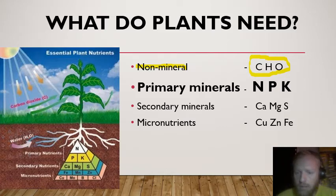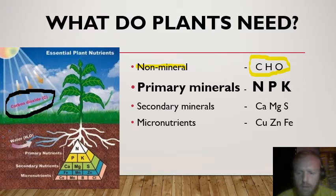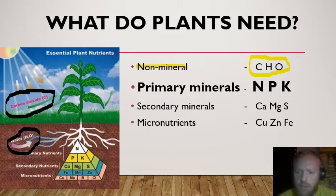Where does the plant get those three elements from? You can see there is an illustration of carbon dioxide being absorbed by the plant through its leaves, and also water being absorbed through its roots. That is where the plant gets C, H, and O from — because carbon dioxide has carbon and oxygen, and water has hydrogen and oxygen.